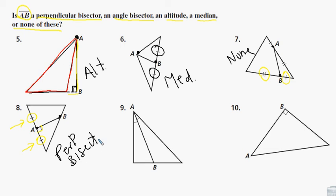Number nine. Let's see. It goes through a vertex, and we have some congruent angles. If it splits an angle into two congruent angles, that makes it an angle bisector.